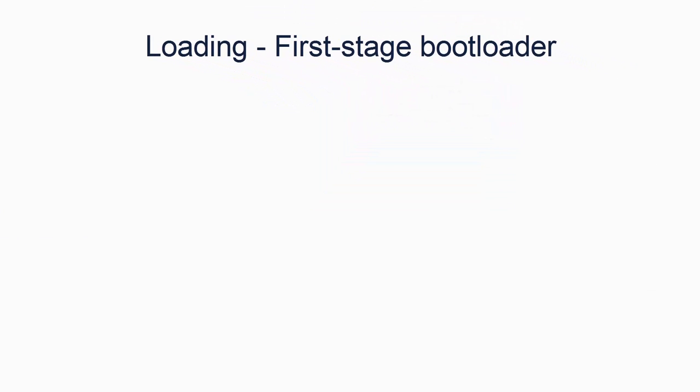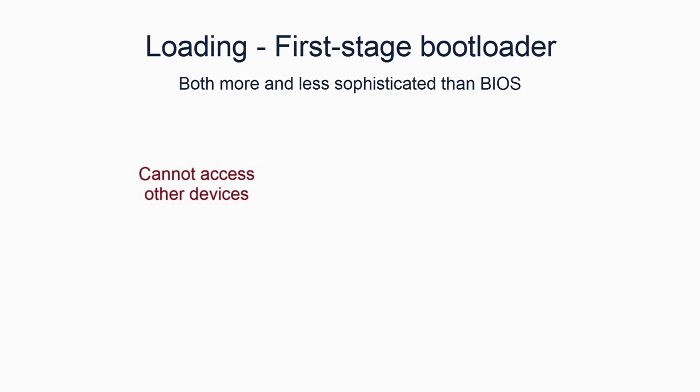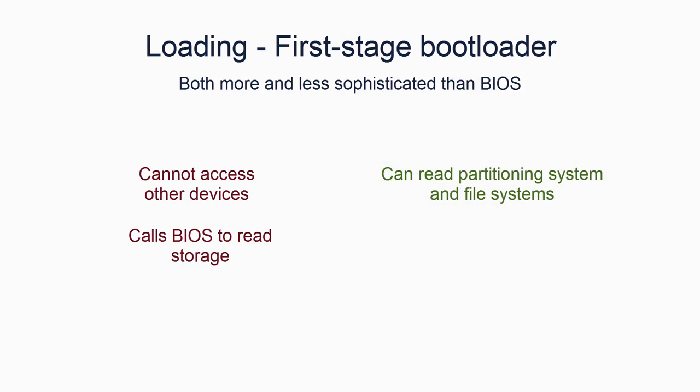The first stage bootloader is in some ways more sophisticated than the BIOS, and in other ways less clever. For instance, the first stage bootloader is not usually capable of reading from other storage devices other than the one it is on, because it will use calls to the BIOS to read from storage and those calls do not easily enable reading from other devices. However, the bootloader is cleverer than the BIOS in that it can read the partitioning system on the device — again, this is MBR. The partitioning system will enable the primary bootloader to load the second stage bootloader, which is stored on the device.